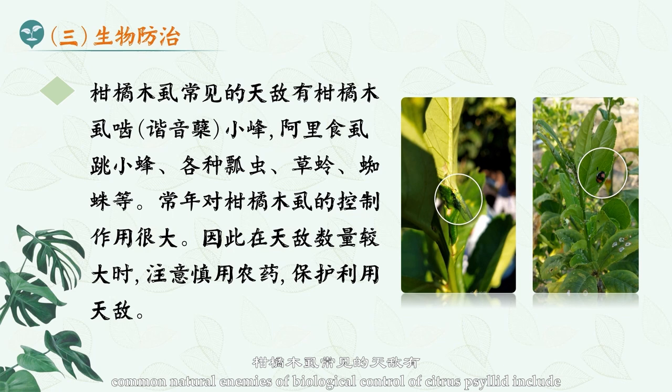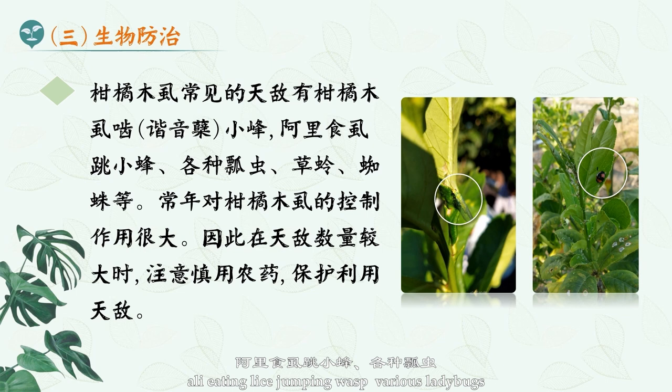Three: Biological control. Common natural enemies for biological control of citrus psyllid include citrus psyllid parasitic wasps, ladybugs, lacewings, spiders, and others. These have a great control effect on perennial citrus psyllid populations.